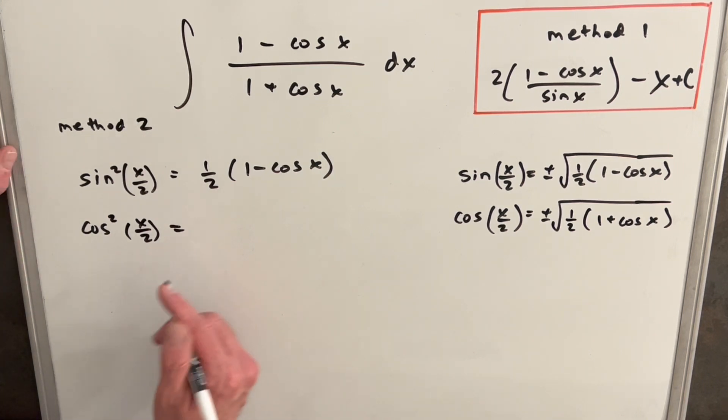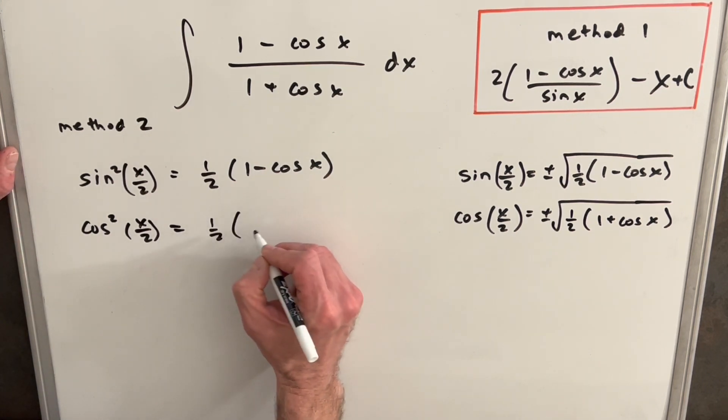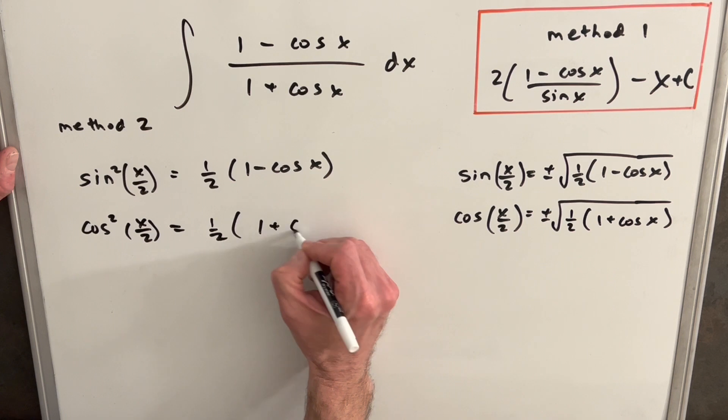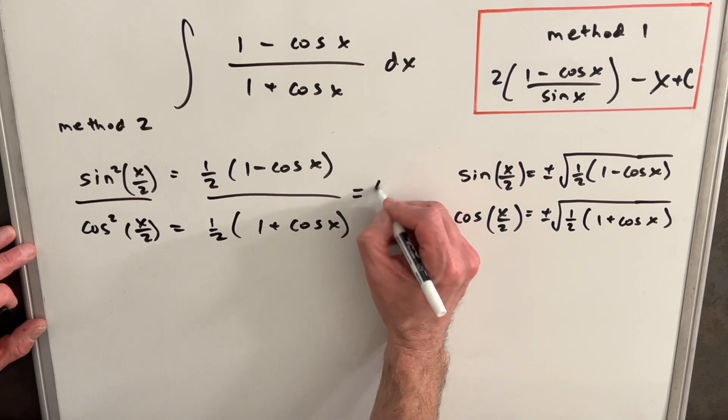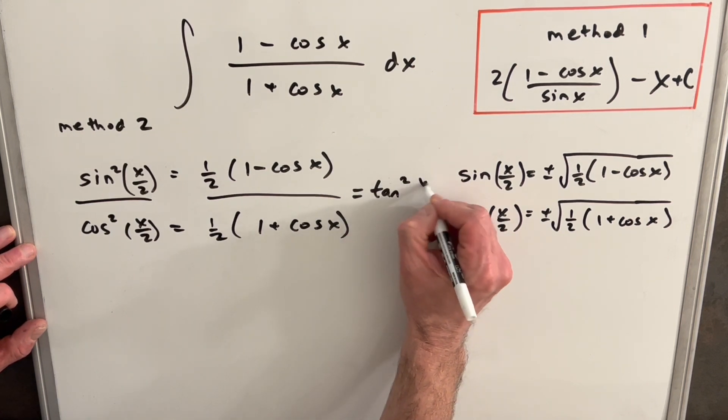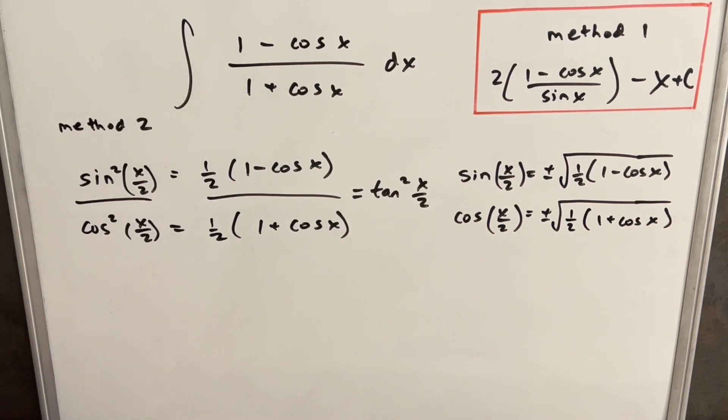So then squaring cos² (x/2), really similar, we're going to have ½(1 plus cos x). So, well, if we take these two things and divide them, we divide sin² by cos², and we're dividing this. Well, this whole thing is actually tan² (x/2).